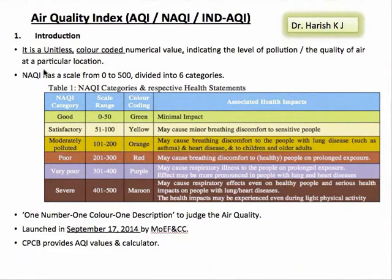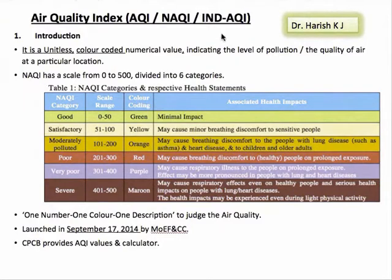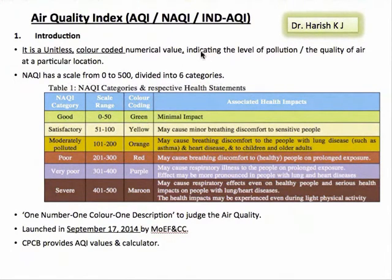Different countries use different methods and scales to represent their air quality. In India we use the National Air Quality Index, also abbreviated as INDAQI. It has a scale from 0 to 500 and is divided into six categories as shown in the table.